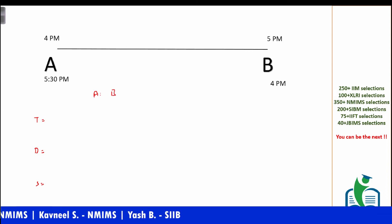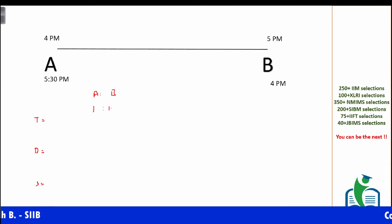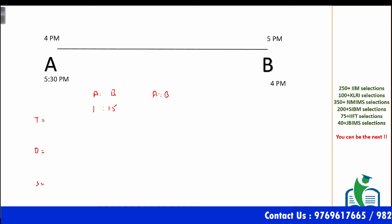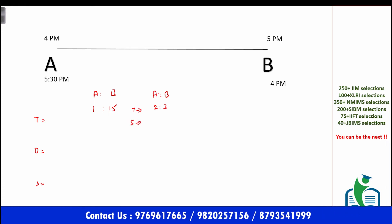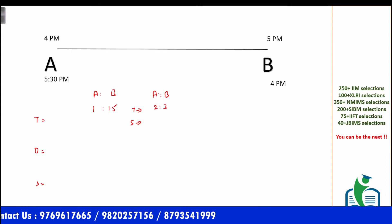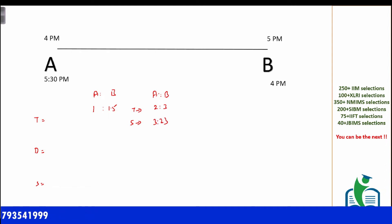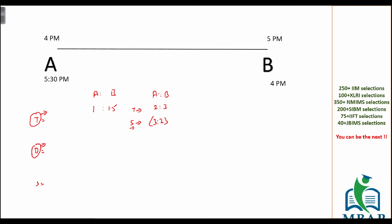Case one — time is constant: A and B cover the same distance. A takes one hour and B takes 1.5 hours, so the ratio of time A to B is 2 is to 3. Since speed and time are inversely proportional, if the time ratio is 2:3, the speed ratio will be 3:2. So the speed of A to B is in the proportion of 3/5 and 2/5 respectively.